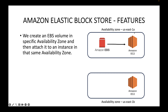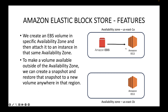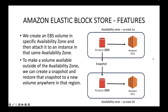To make a volume available outside its Availability Zone, you can create a snapshot of it. A snapshot is essentially a backup. Using that snapshot, you can create a new EBS volume in a different Availability Zone and attach it to an EC2 instance running there. The key point remains: the EBS volume and EC2 instance must be in the same Availability Zone to attach the volume.